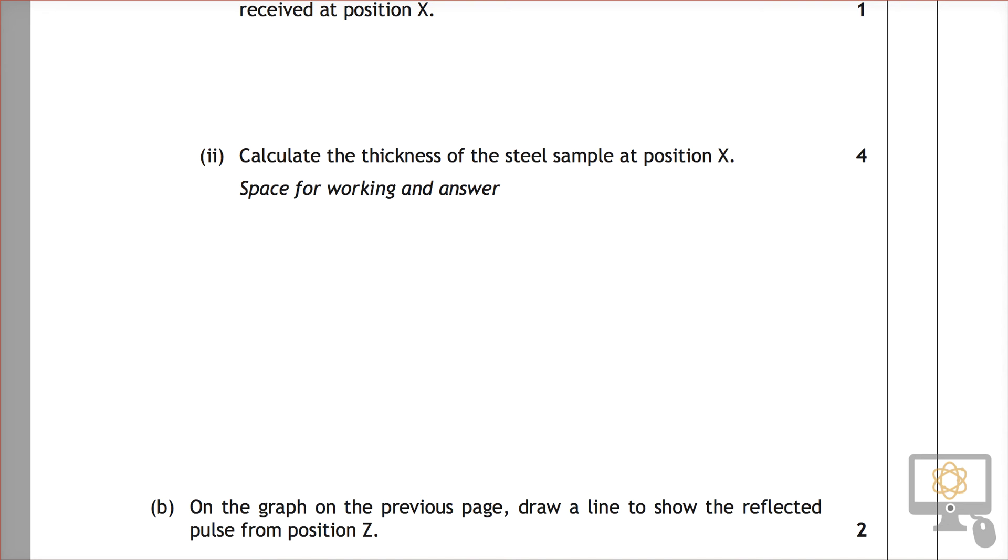Look at question 3b from the National 5 2015 physics paper. It's right here at the very bottom of the screen. It says on the graph on the previous page, draw a line to show the reflected pulse from position z.